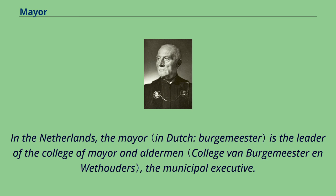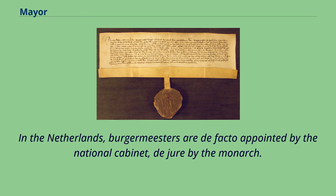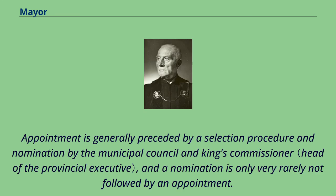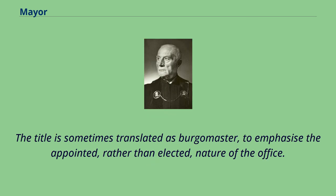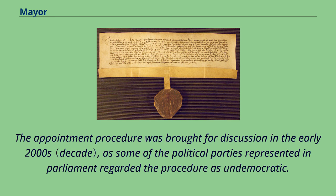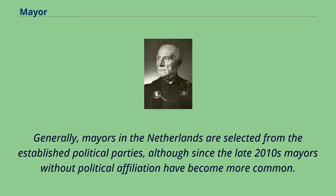In the Netherlands, the mayor is the leader of the College of Mayor and Aldermen, the municipal executive. Burgemeesters are de facto appointed by the national cabinet, de jure by the monarch. Appointment is generally preceded by a selection procedure and nomination by the municipal council and king's commissioner. Mayors preside over both the municipal executive and the legislative, although they can vote in the latter and not in the former. The title is sometimes translated as burgomaster, to emphasize the appointed rather than elected nature of the office. The appointment procedure was brought for discussion in the early 2000s, as some political parties regarded the procedure as undemocratic. Generally, mayors in the Netherlands are selected from the established political parties, although since the late 2010s mayors without political affiliation have become more common.